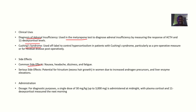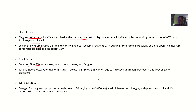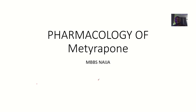Common side effects include nausea, headaches, dizziness, and fatigue. Serious side effects include the potential for hirsutism — excessive hair growth in women — due to increased androgen precursors. Administration is about 30 mg/kg, given at midnight, with plasma cortisol and 11-deoxycortisol measured the next morning.